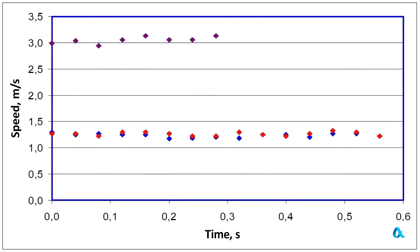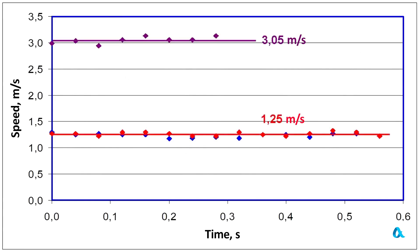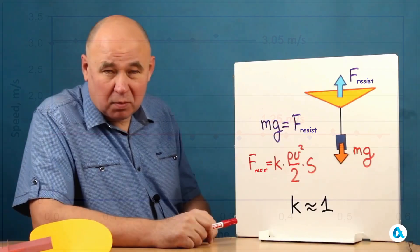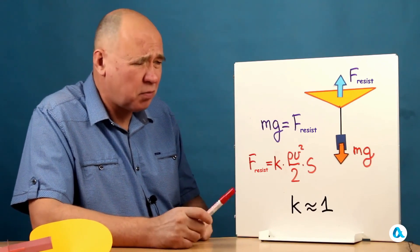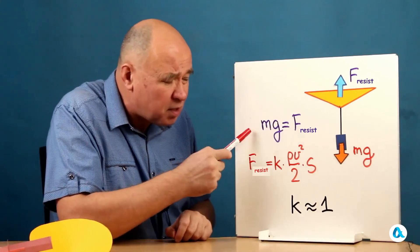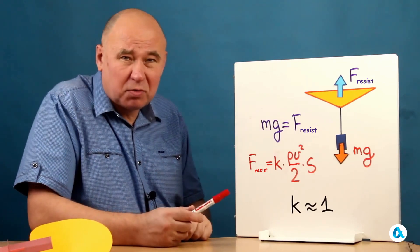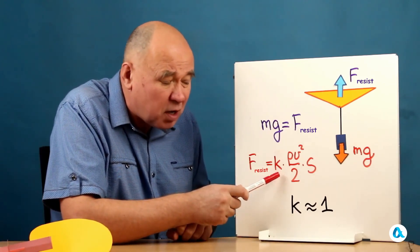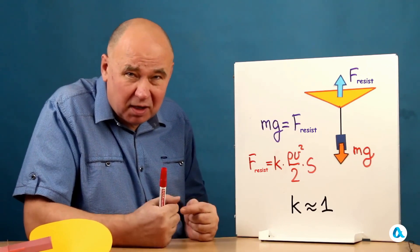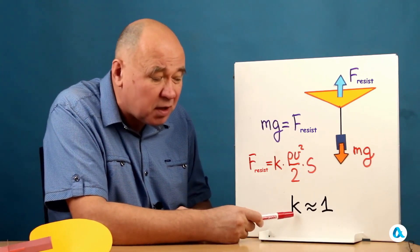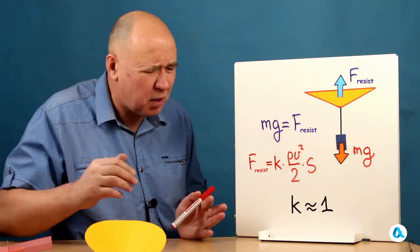The graphs show that the speeds during the test were indeed constant. The parachute and the rotating helicopter descended at a speed of 1.25 meters per second, while the non-rotating helicopter — better described as a parachute with a reduced area — descended at 3.05 meters per second. The force of resistance in aerodynamics is expressed as the drag coefficient multiplied by half the square of the velocity and multiplied by the area. Substituting all data, the drag coefficient for this parachute was approximately 1.